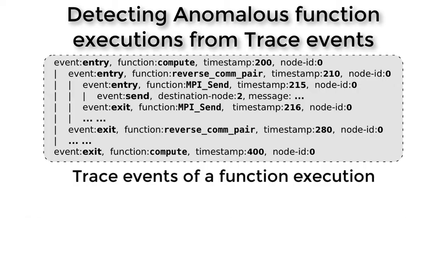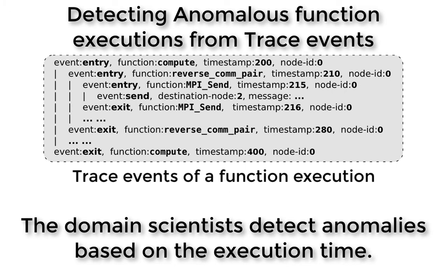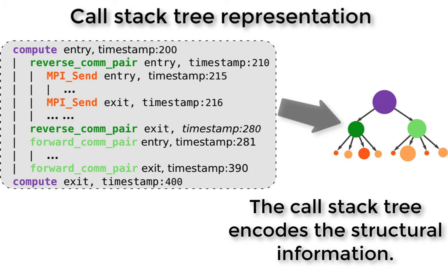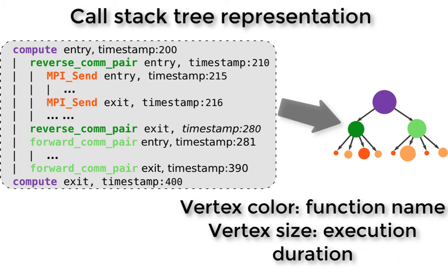Anomalous runtime behavior detection is one of the most important tasks for performance analysis in high-performance computing. Most existing anomaly detection methods in HPC are based on the execution times of the functions. To take advantage of the context information, we improve the existing methods by representing each function execution as a call stack tree.